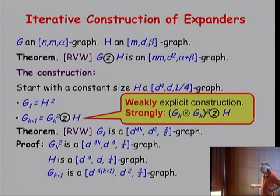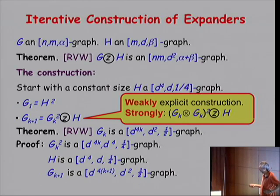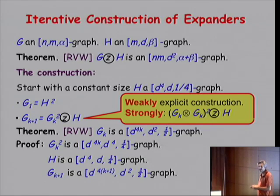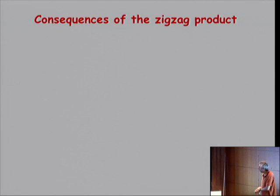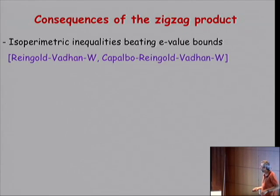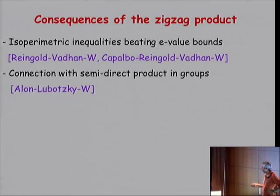This iteration generates in polynomial time a polynomial-size graph. If you wanted exponential-size growth, you'd apply a simple trick: before squaring, you tensor the graph with itself. That gives exponential speed of growth. What are the consequences? We had algebraic constructions — why have others? It turns out there are many more consequences, some really new, and we see more and more of them. In particular, this does a much better job for vertex expansion.